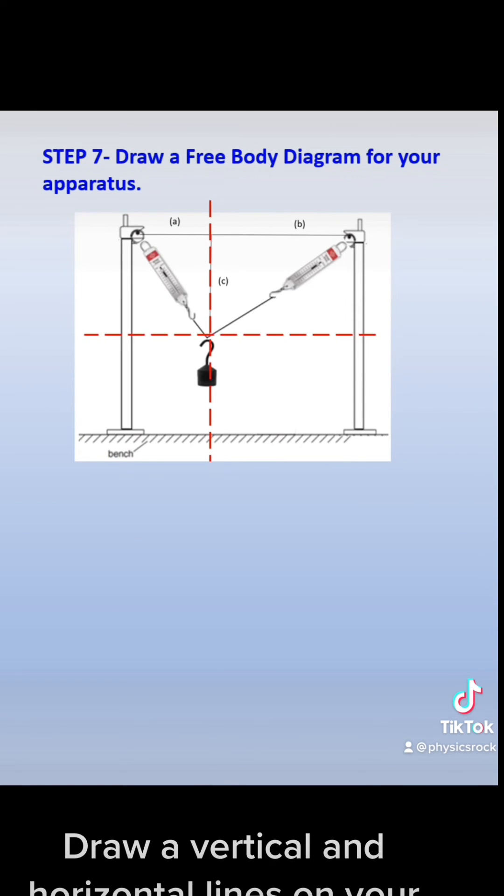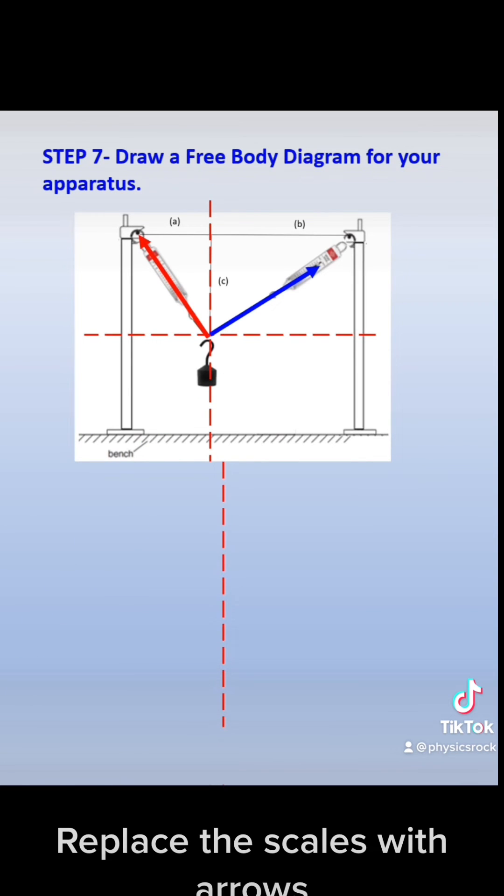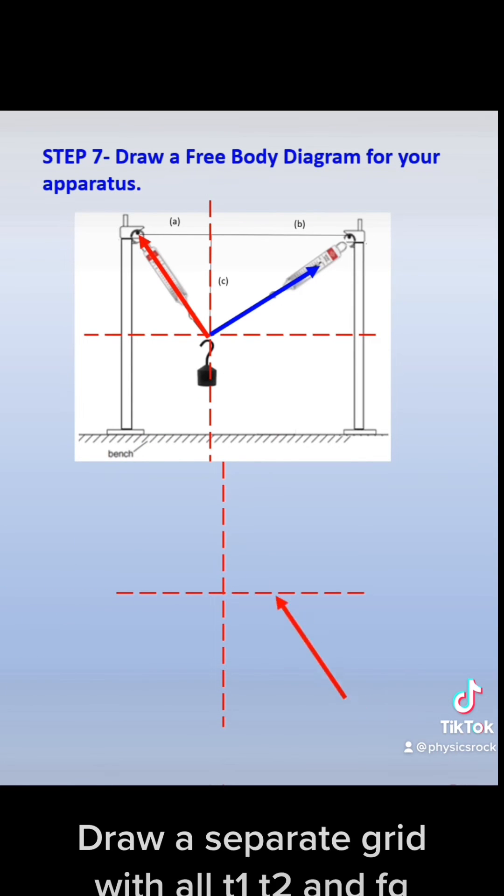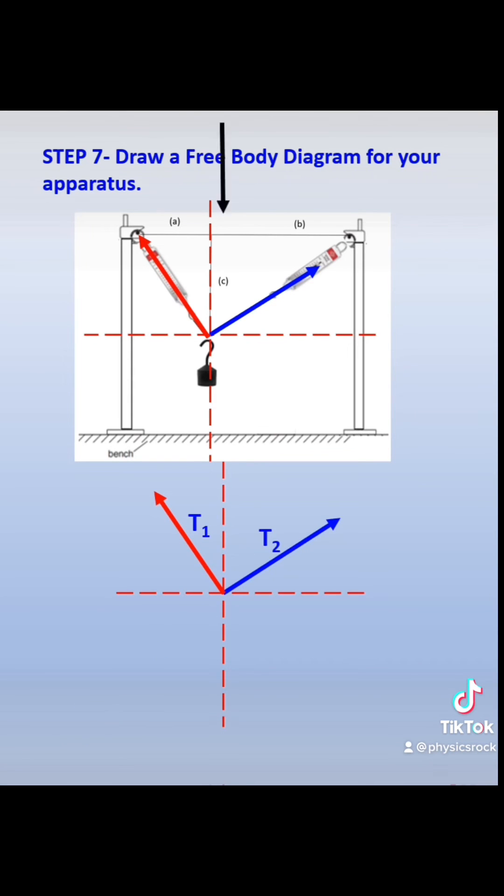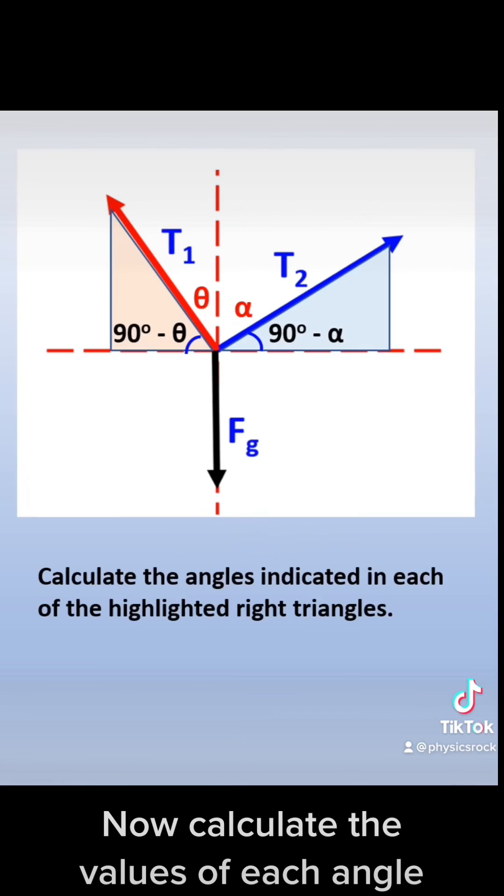Draw vertical and horizontal lines on your diagram. Replace the scales with arrows. Draw a separate grid with all T1, T2, and FG arrows. Now calculate the values of each angle indicated on both right triangles.